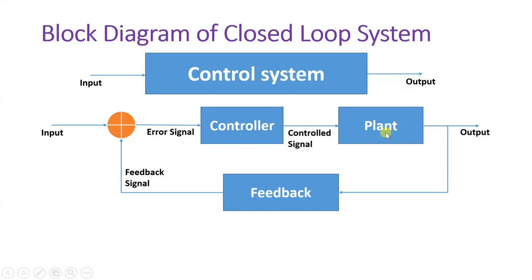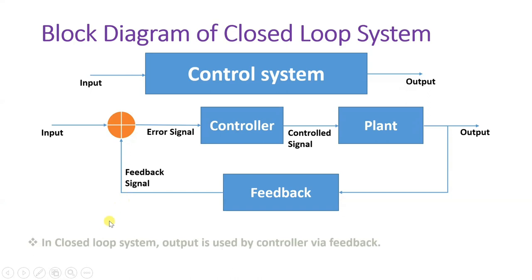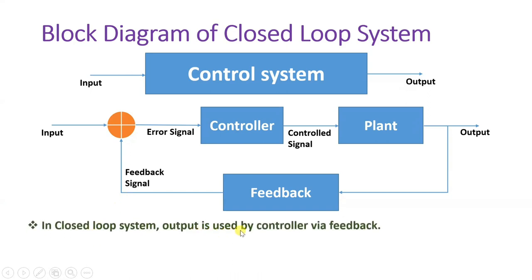One important thing to understand is that because of this feedback, the controller now has information about both input and output. So if any disturbance is generated at the output side, that disturbance can be nullified by the feedback signal as per the error signal. This is one basic advantage of the closed-loop control system — the controller has knowledge of both input and output due to feedback. In a closed-loop system, the output is used by the controller via feedback, and that is the major purpose of the closed-loop system.